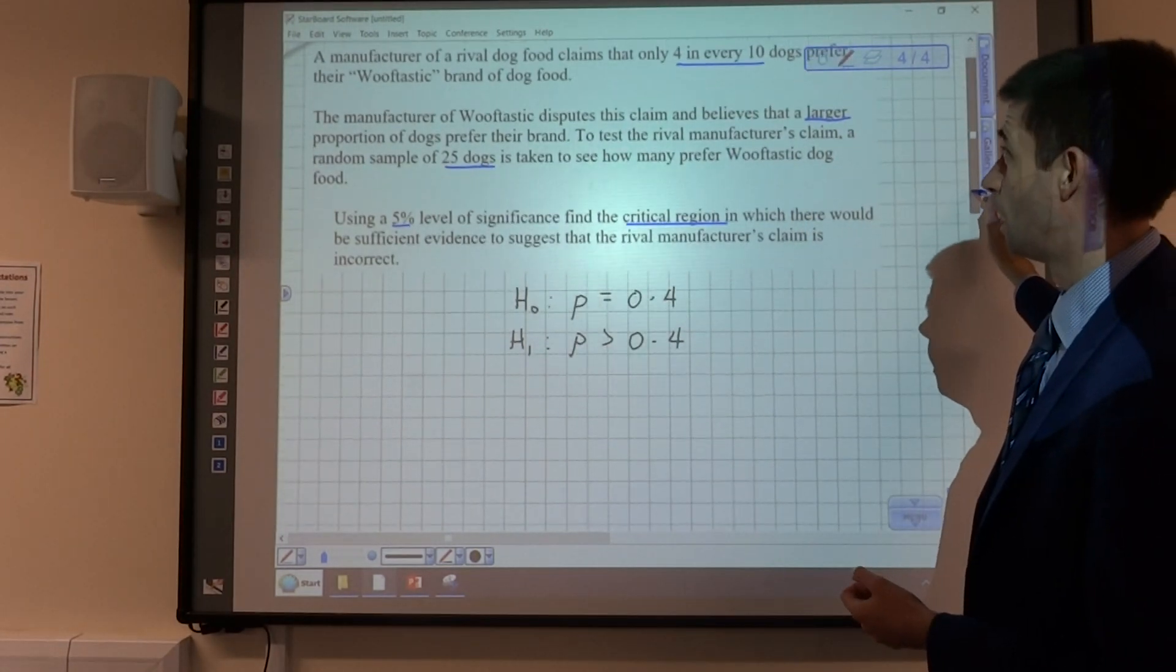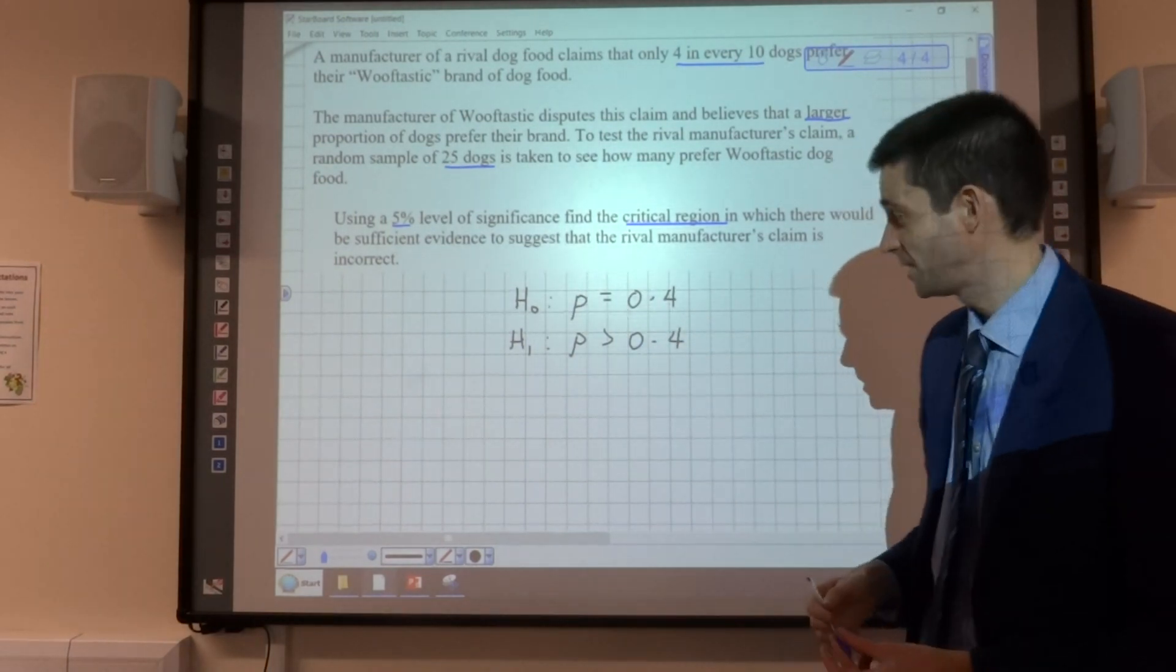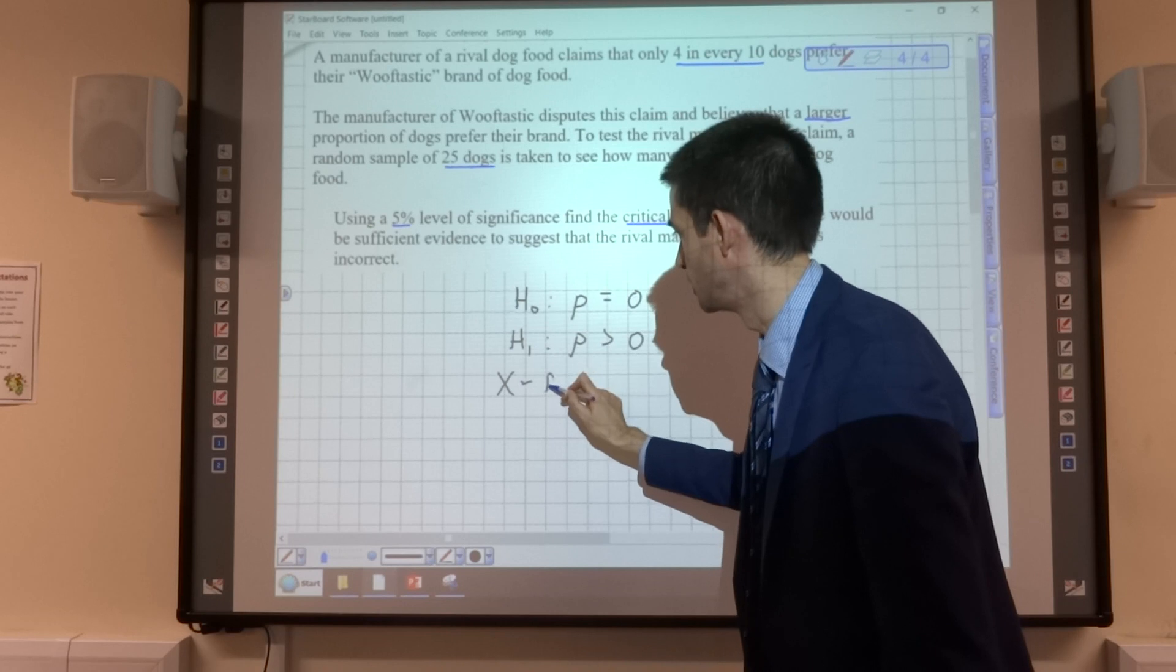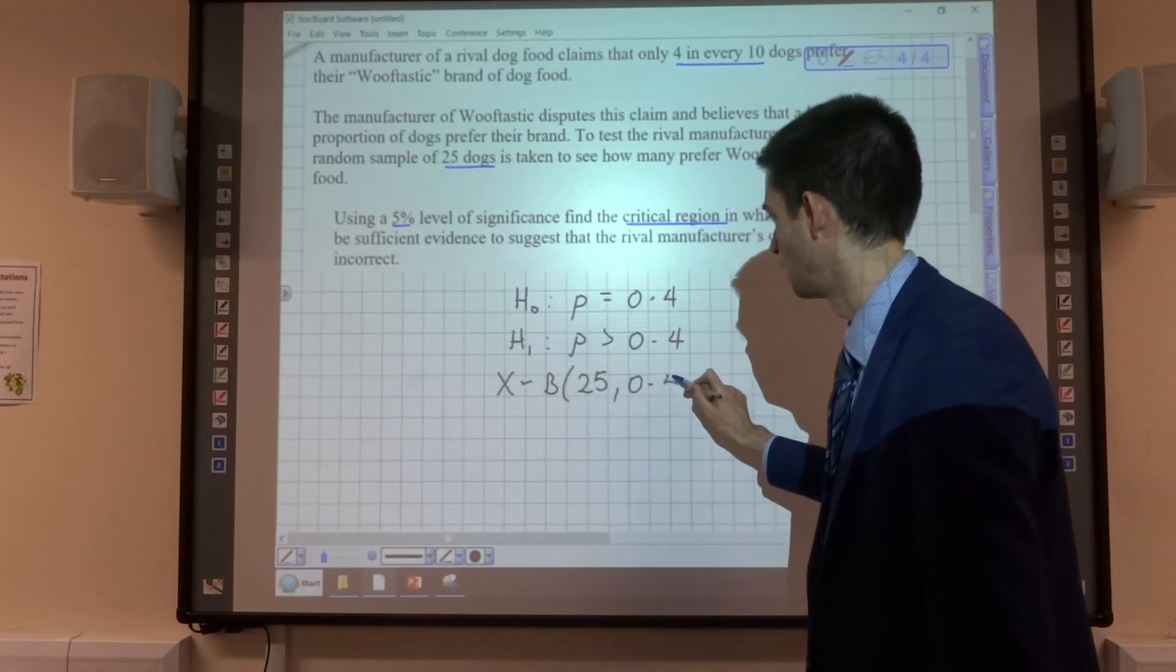And the binomial distribution we're going to use to test this, we're going to get that X follows the binomial distribution, 25, 0.4.